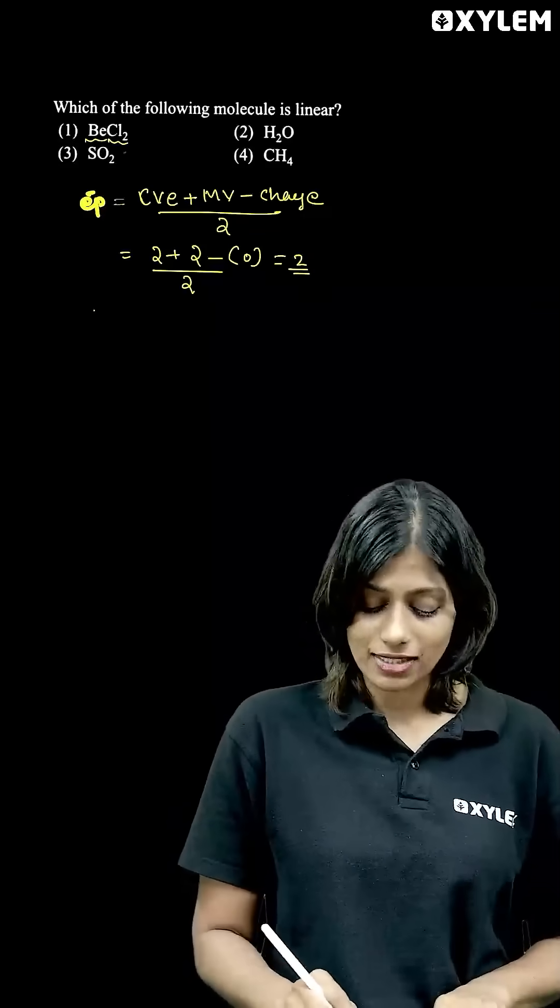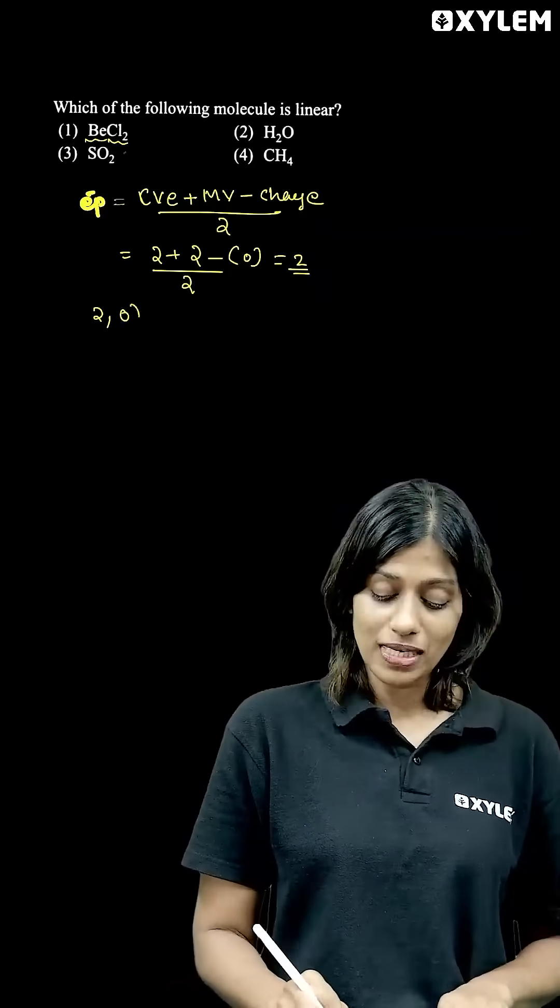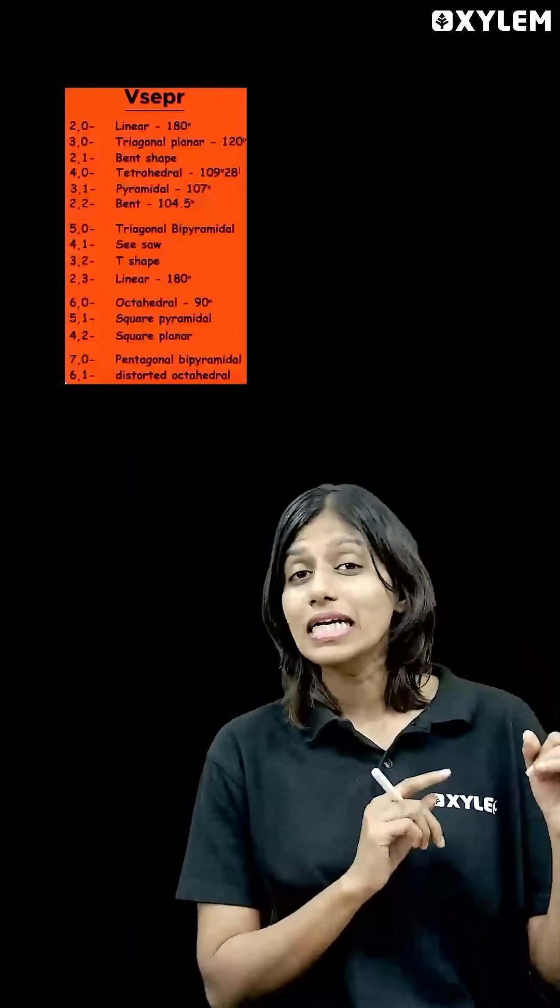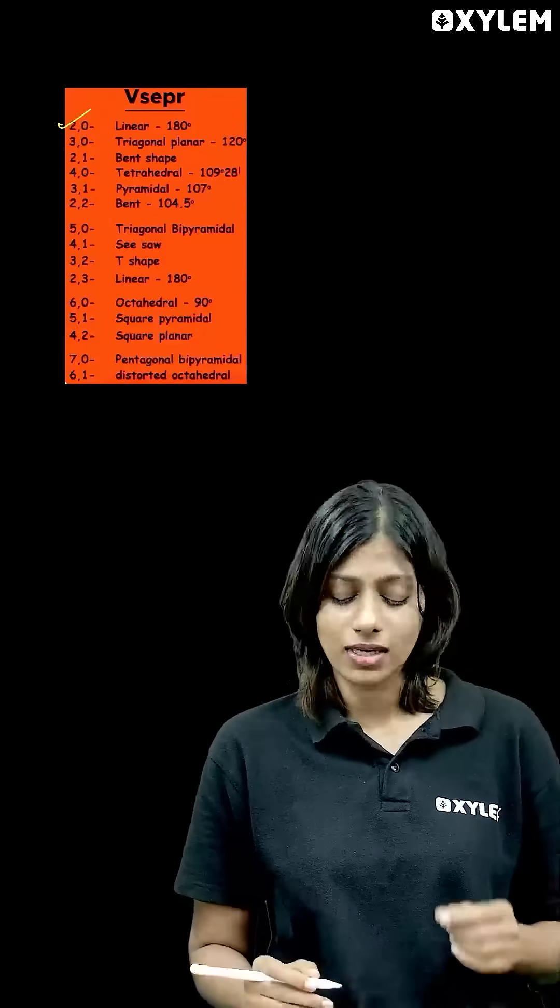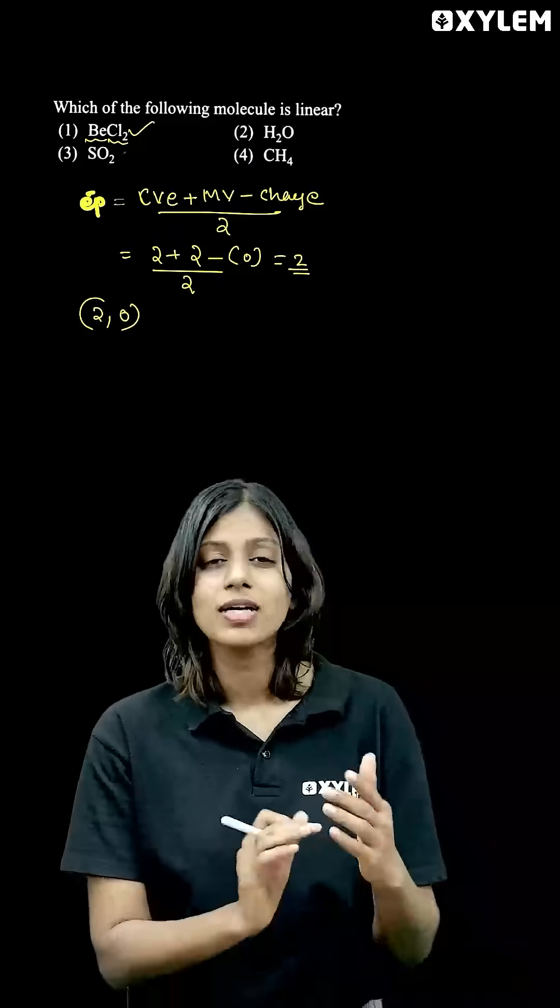So the 2-0 category will give you linear shape from the table. That is the one we have to find, the linear shape option. BeCl2.